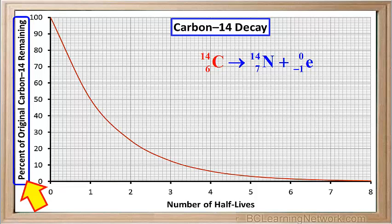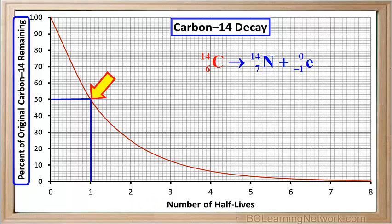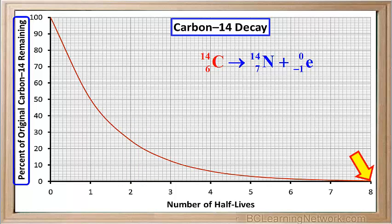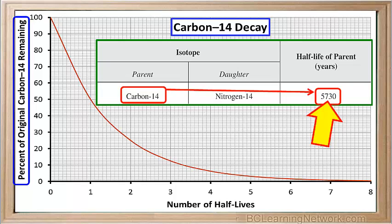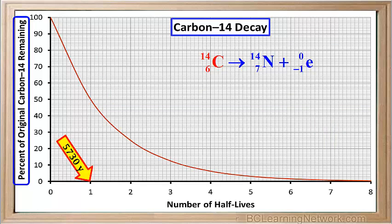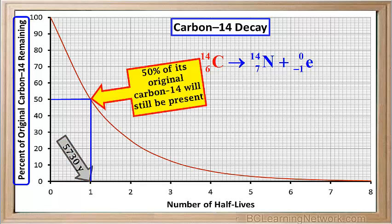This graph shows the percent of original carbon-14 remaining in a dead organism as it ages. It shows the percent remaining after each half-life. For example, after one half-life, 50% of the original carbon-14 remains. And after two half-lives have passed, 25% of the original carbon-14 remains in the sample. By the time it reaches eight half-lives, there is hardly any carbon-14 left. We know that the half-life of carbon-14 is 5,730 years. So if the object has been dead for 5,730 years, 50% of its original carbon-14 will still be present, and the other 50% will have been converted to nitrogen-14.